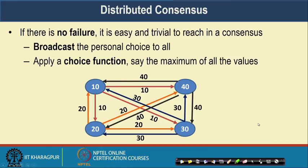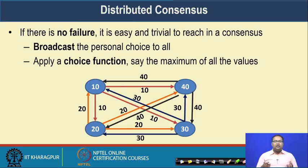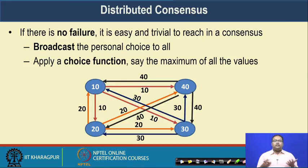If there is no failure in the system, then it may be easy and trivial to reach consensus. A generic algorithm can be something like: you broadcast your personal choice to all, and then you apply a choice function. In this case, if your choice is the maximum of all the received values, then you can achieve consensus.